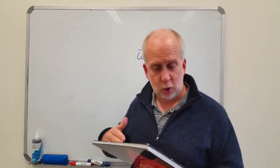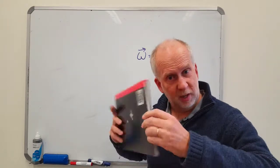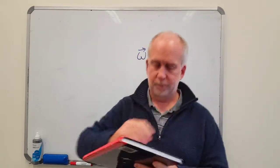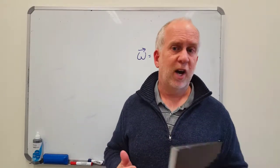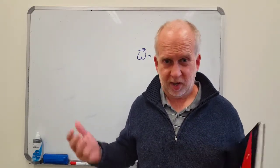We choose the direction to be along the axis of rotation. So if it is spinning like this, it'll be in this direction. But is it going this way, or that way? To do that, physicists have decided to use, as a convention, the right-hand rule.